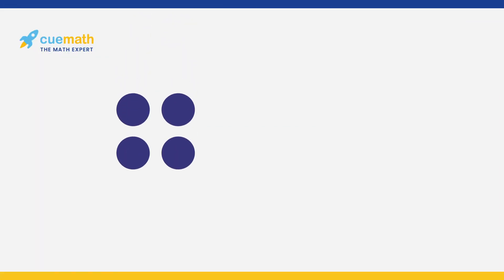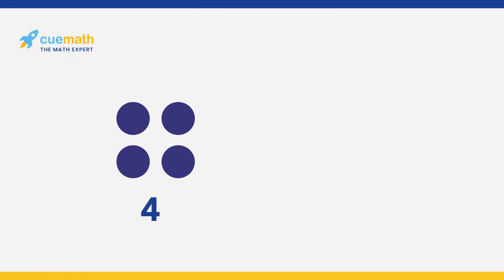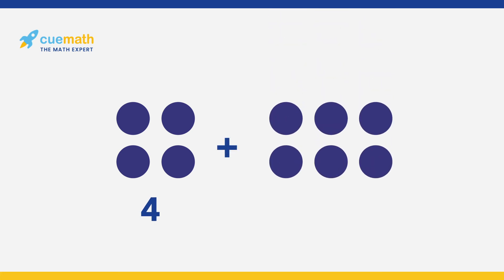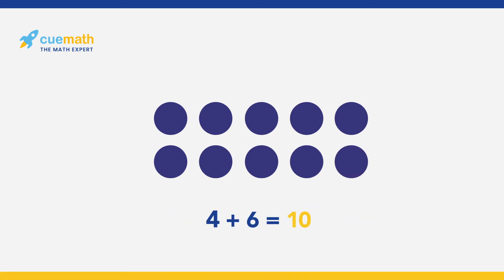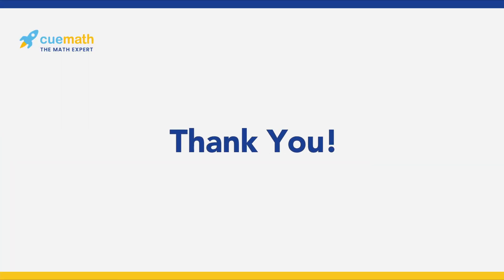Can you try to solve one more? We have four counters. Can you add six more counters to them? Let us see. We already know we have four counters. Let us count the rest of them: five, six, seven, eight, nine, ten. Hence, four plus six equals ten. Isn't addition of two numbers easy?